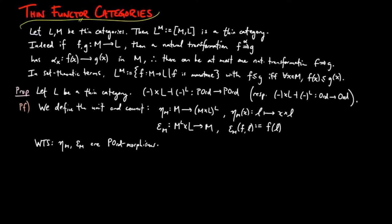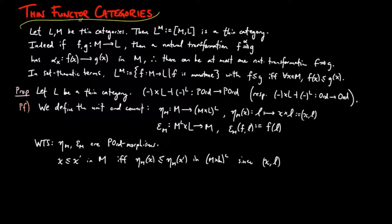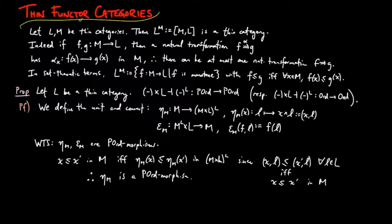For (1): X ≤ X' in M if and only if η_M(X) ≤ η_M(X') in the product M × L^L, since (X, L) ≤ (X', L) for all L in L, which is equivalent to X ≤ X' in M. Therefore, η_M is a preorder morphism.